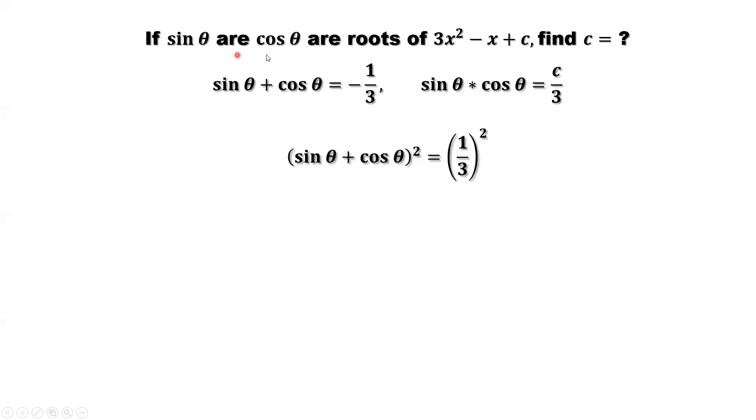Let's square both sides of the first result. Left-hand side, that's sine squared plus 2 sine cosine plus cosine squared. Right-hand side is 1 over 9. That's 1 third squared. Now here, we have another important result to use. Sine squared plus cosine squared equals 1.